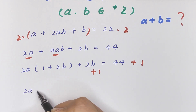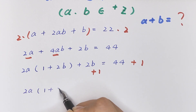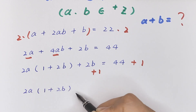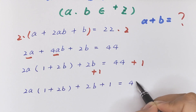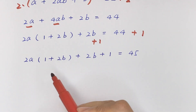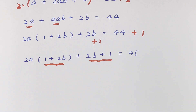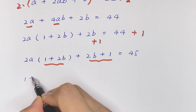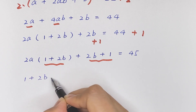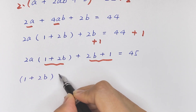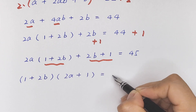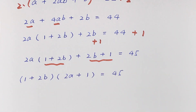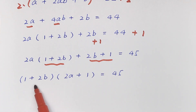Now I want to make (1 + 2b) a common factor, so I add 1 to both sides: 2a(1 + 2b) + (2b + 1) = 45. So (1 + 2b)(2a + 1) = 45.